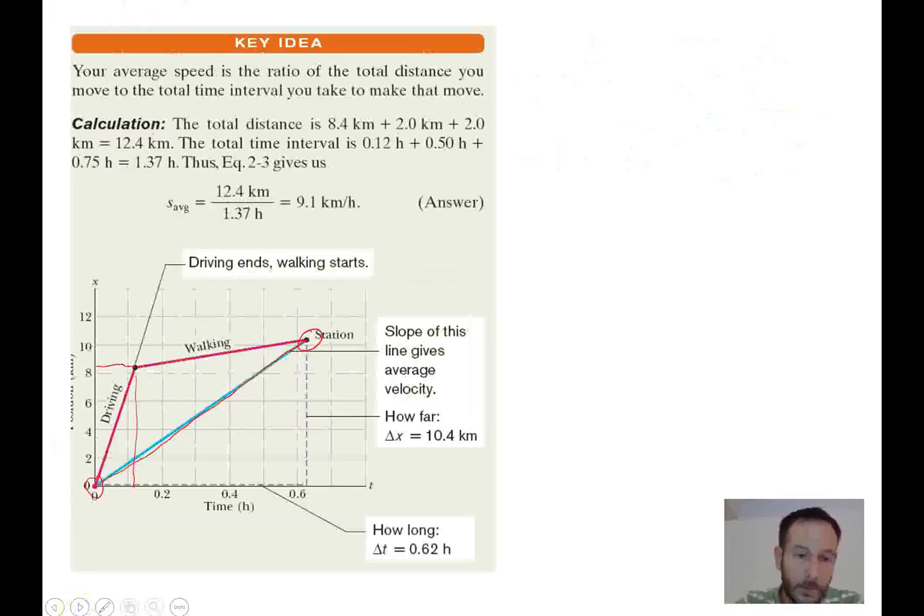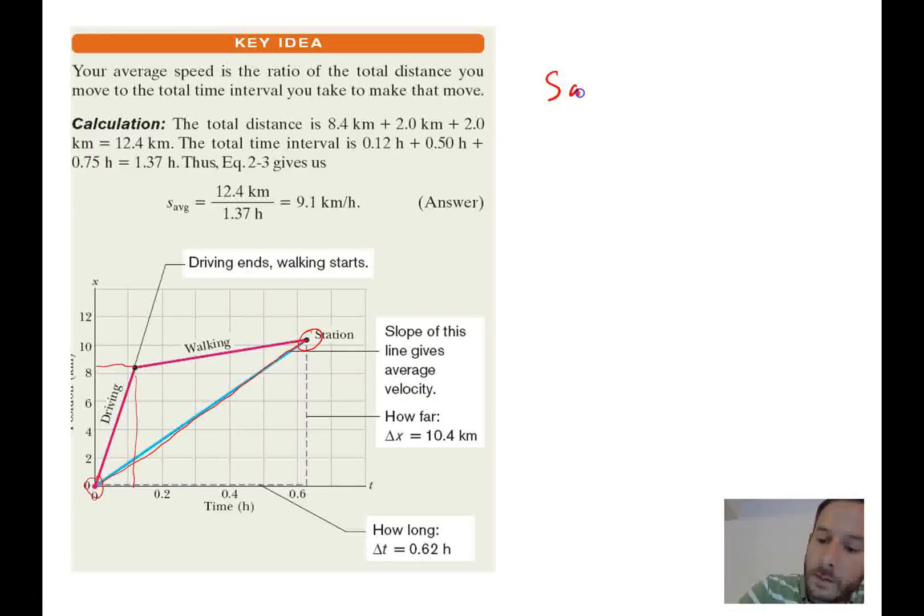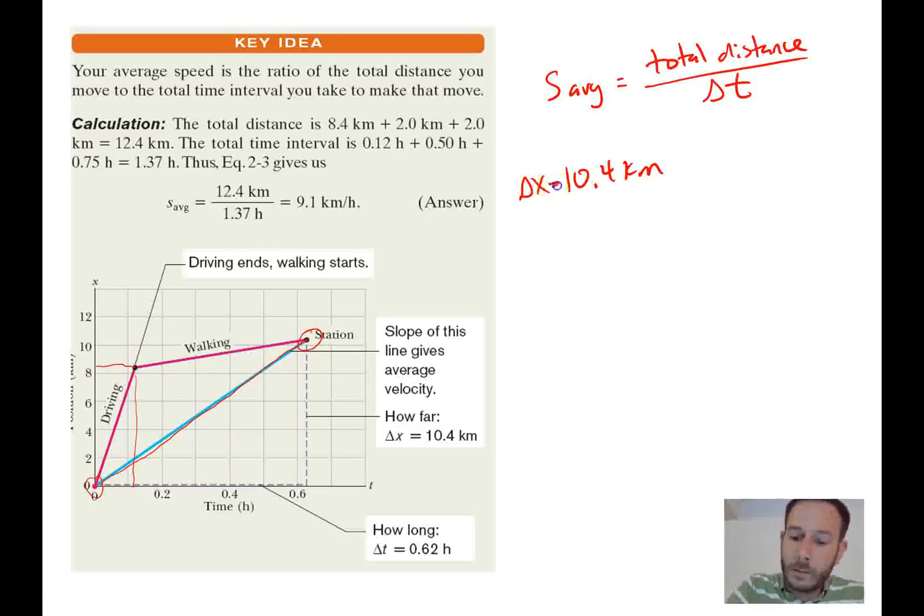Okay. So again, average speed is going to be our total distance divided by our total time. All right. So for distance, we know that to get all the way to the gas station, it was going to take 10.4 kilometers. Okay. But she also walked back another 2 kilometers. So if you add 2 kilometers, you're going to end up with a total distance of 12.4 kilometers.